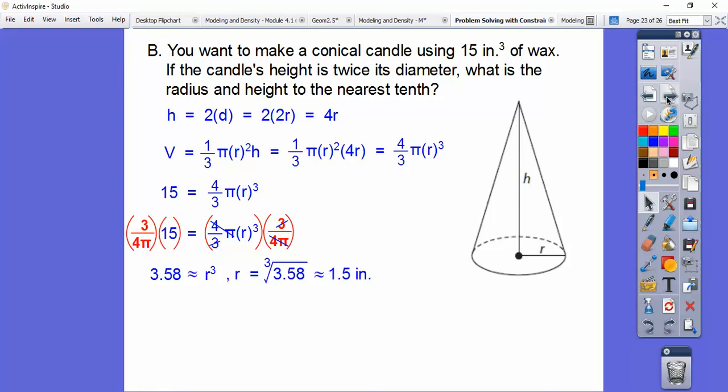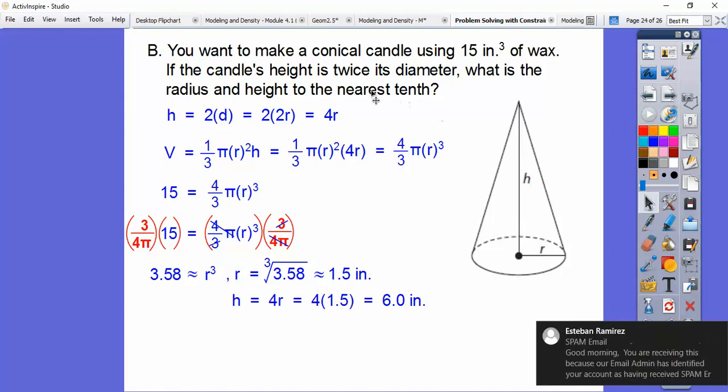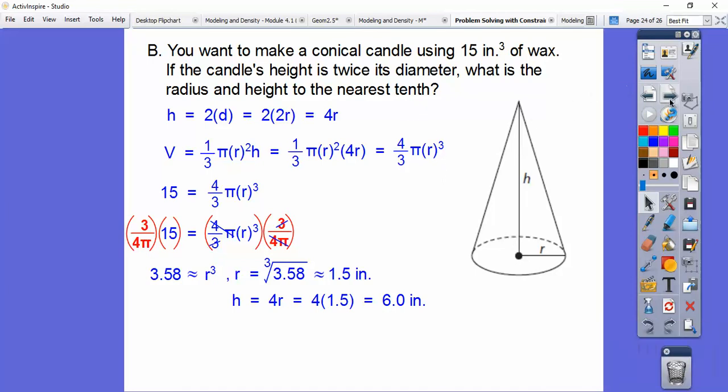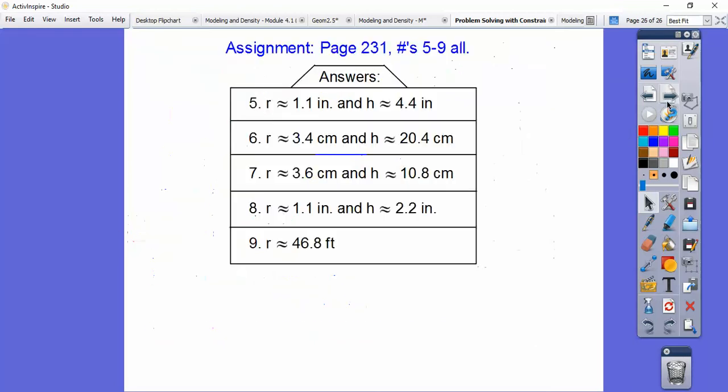So we get the radius to be about 1.5 right there. So the height is 4 times that, so it's about 6.0. Notice it said round to the nearest tenth right there. So let's see. I had all of those numbers left in my calculator, so when I multiplied it times 4, I got about 6.1. But anyways, you should be okay with that.